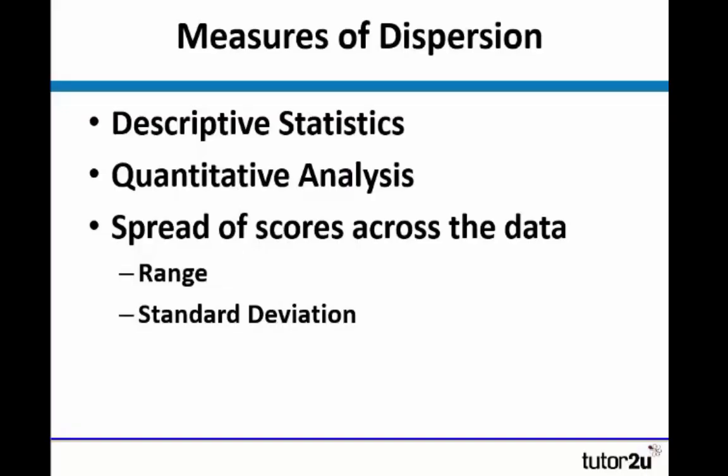Measures of dispersion are a type of descriptive statistic which involve quantitative analysis, and they tell us about the spread of scores across the data. The two different measures that you need to know for A-level psychology and IB psychology are range and standard deviation.